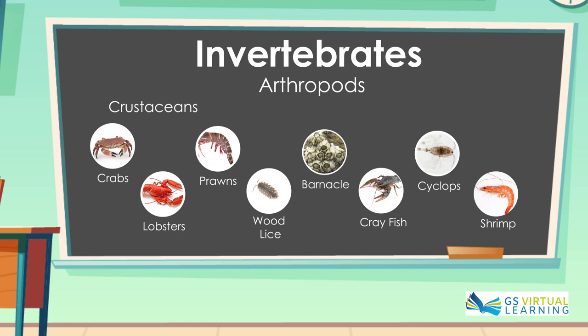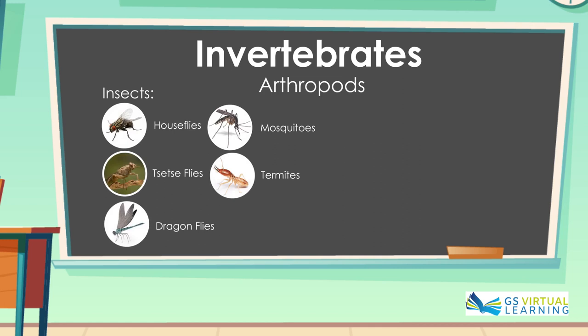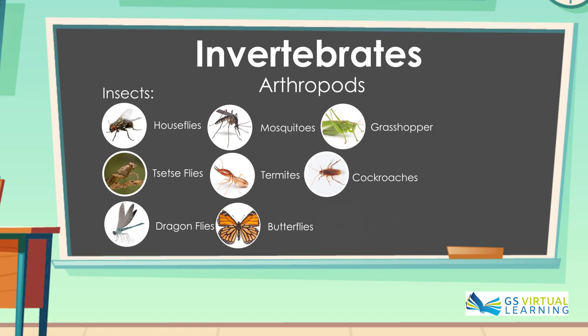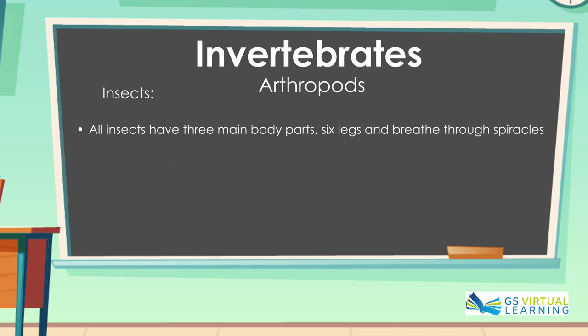Insects, such as Houseflies, Sassaflies, Dragonflies, Mosquitoes, Termites, Butterflies, Grasshoppers, Cockroaches, Moths and Bees. All insects have three main body parts, six legs and breathe through spiracles.